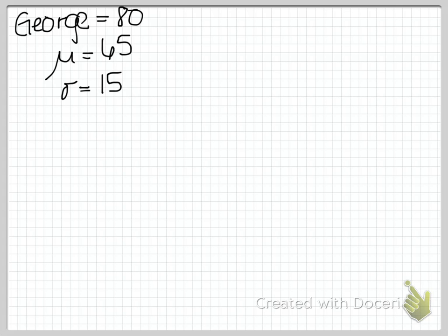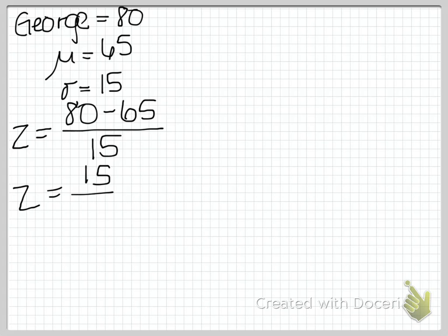Now the first thing we need to do to figure out what the corresponding grade is in Samuel's class is to find out George's z-score. So we'll use the same method we were using before. We have a score of 80, we subtract our mean, and we divide by 15. In this case we have 15 over 15 or a z-score of 1.